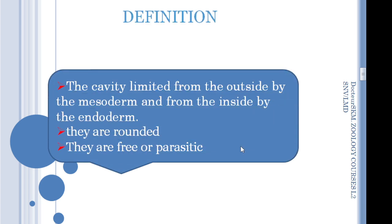The pseudocelomates are characterized by the presence of a cavity, so they are not flattened such as platyhelminthes. This cavity is limited only on the outside by the mesoderm, and on the inside it is covered by the endoderm. That's why we can't call this cavity a celom — it is only an internal cavity. Because they contain a cavity, they are not flat but rounded.